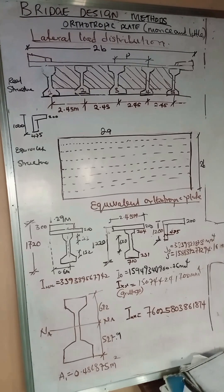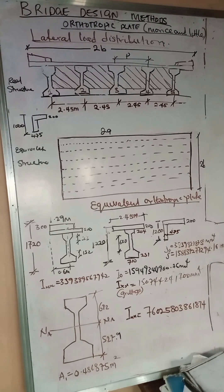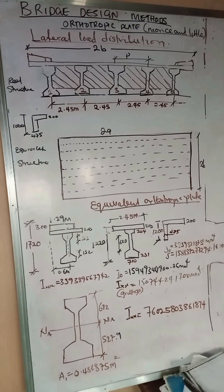In the orthotropic plate method, we represent the entire deck system with an equivalent orthotropic plate. To do that, the properties of the bridge deck must be obtained first — properties like the moment of inertia, the torsional inertia of the I-section, the composite I-section, and the diaphragm. This method involves the use of setting curves. The initial investigator who worked on the orthotropic plate method for bridge decks was Guion, and the Guion method involved the use of setting tables comprising coefficients for load distribution.